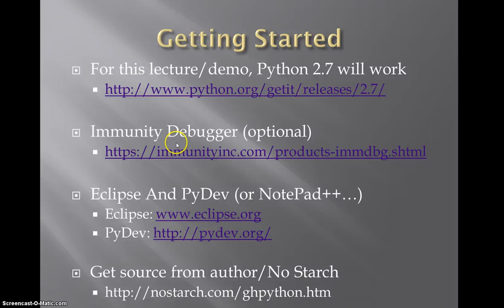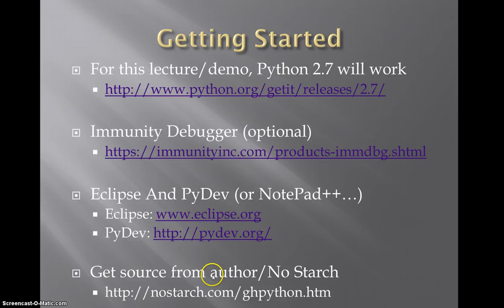Eclipse and PyDev — the author does have you set up this environment. However, I'm just going to use Notepad++ and the command line for this presentation, so it's up to you. Eclipse is pretty straightforward, although it is a fairly large download. Getting PyDev set up, following along in the book, it's not quite the same but still pretty easy. To get the source code from the author at No Starch, just go to NoStarch.com/ghpython.htm. It's kind of buried in the middle of the page, but you can get a zip file, download and extract it, and it'll have everything we're going to talk about today.